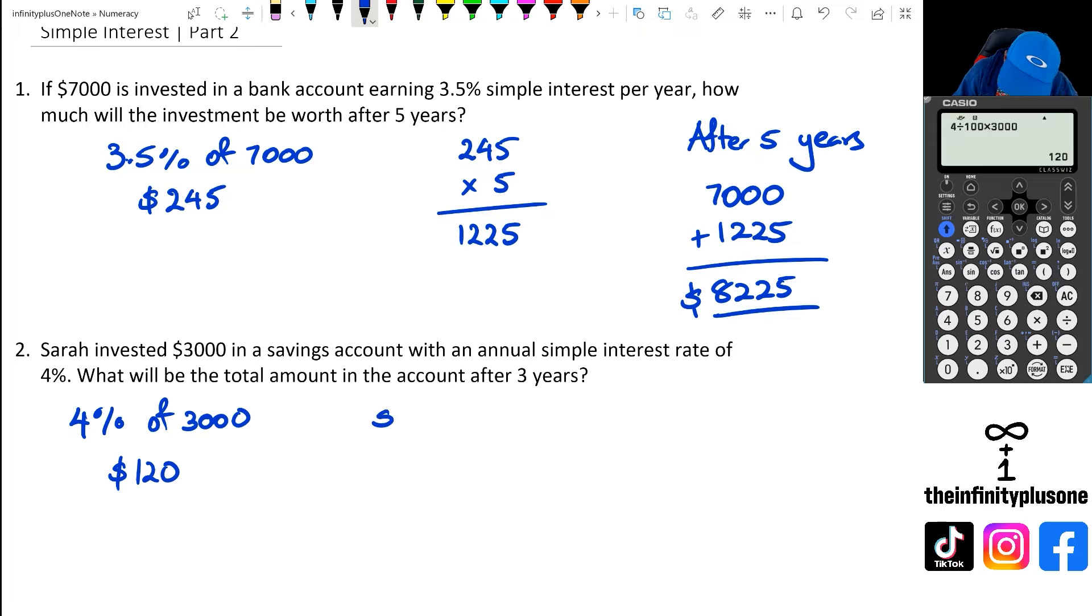And of course, this is being done for three years. So I'm going to do 120 times three, which equals $360. And then finally, I'm going to add $3,000 plus the $360, which is going to give me $3,360. That's the total amount after three years.